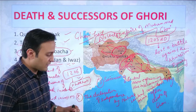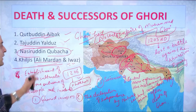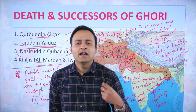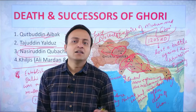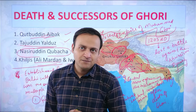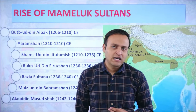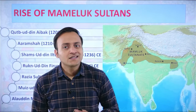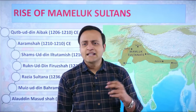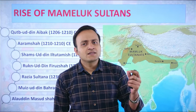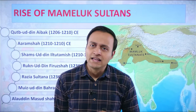I hope it is absolutely clear to all of you what were the circumstances during the death of Muhammad Ghori and how those circumstances led the path to the establishment of Delhi Sultanate. Now let us understand about the rise of the Mamluk Sultans. The literal meaning of Mamluk is a slave. In this entire dynasty, the rulers one after the other were either slaves of the preceding ruler or successors in the family or house of the slave rulers.